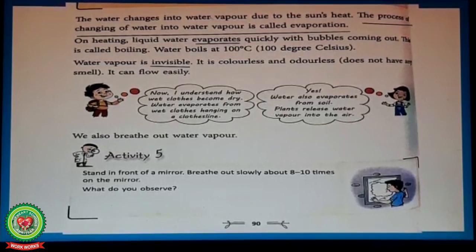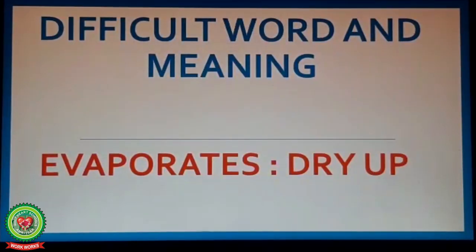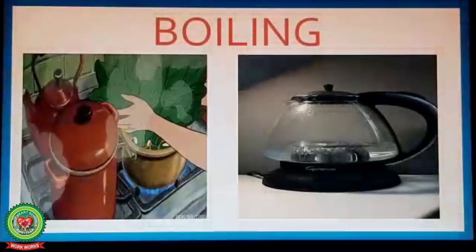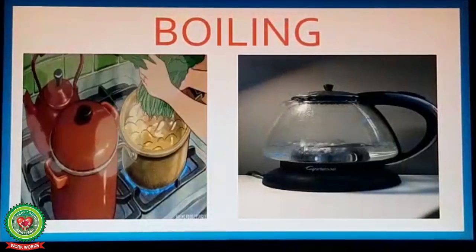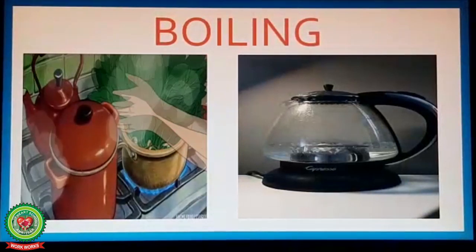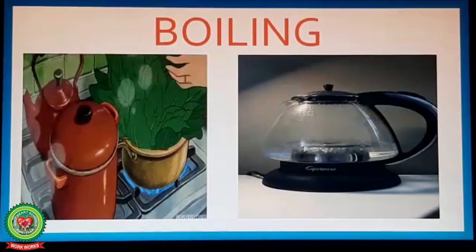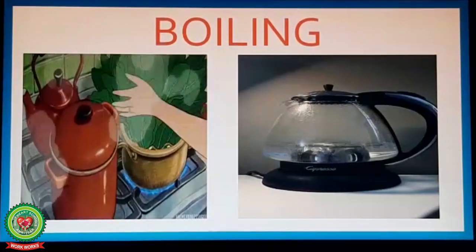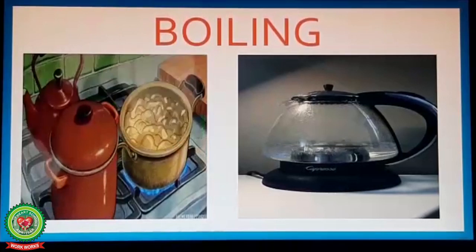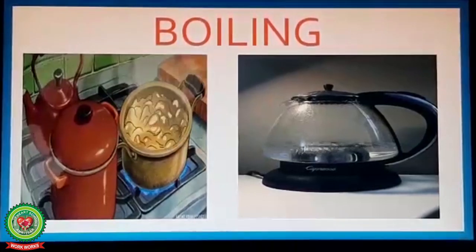On heating, liquid water evaporates quickly with bubbles coming out — this is called boiling. Water boils at 100 degrees Celsius. Underline the word 'evaporates' and write its meaning: dry up. Boiling is the change of liquid form to gaseous form when it is heated above its boiling point. The boiling point of water is 100 degrees Celsius.